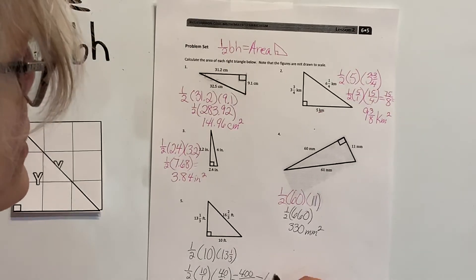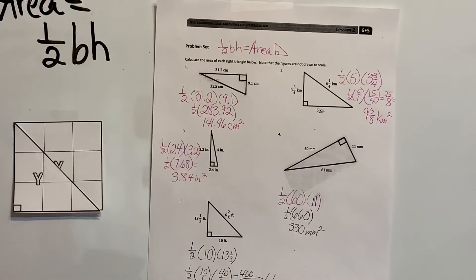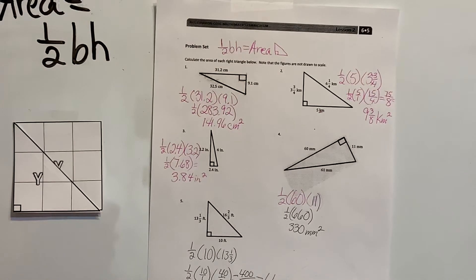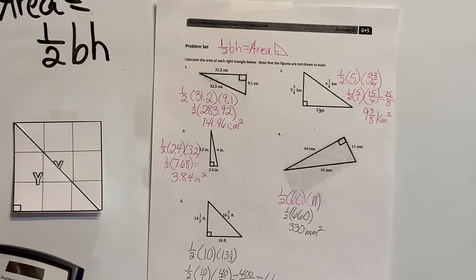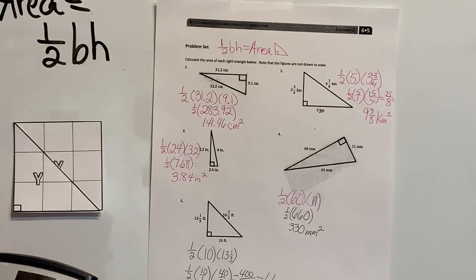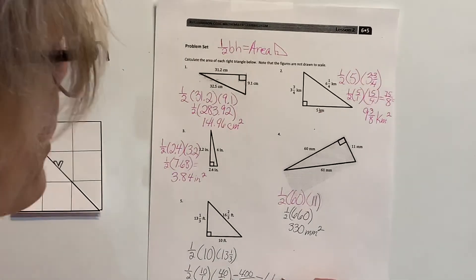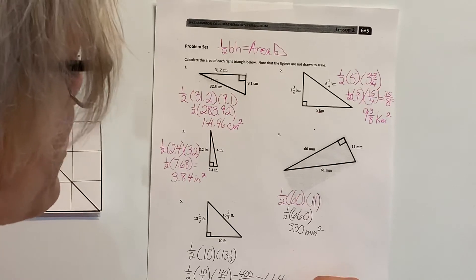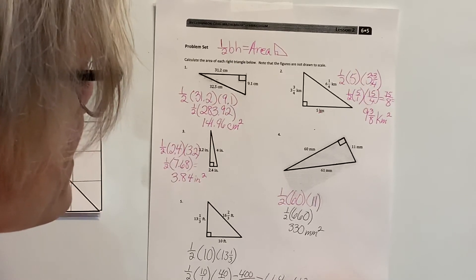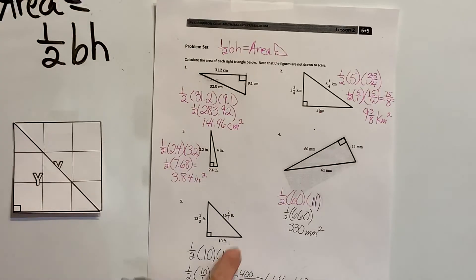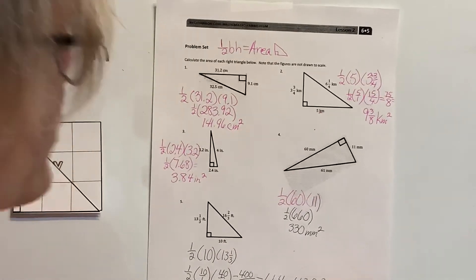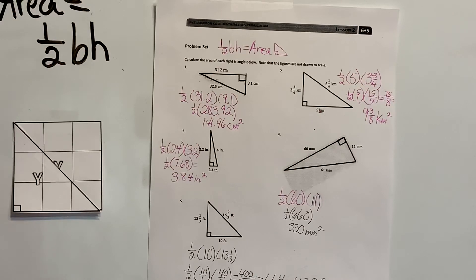Taking 400 divided by 6: 66 times 6 is 396, leaving a remainder of 4. So we get 66 and 4 sixths, which reduces to 66 and 2 thirds. The answer is 66 and 2 thirds feet squared.